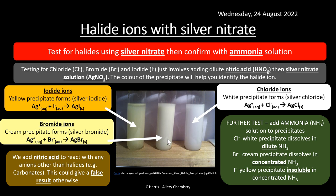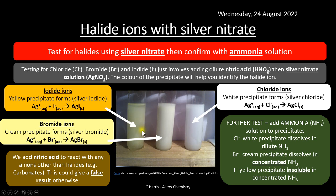If ammonia is added and the white precipitate dissolves in dilute ammonia, it contains chloride ions. If dilute ammonia is added to bromide or iodide precipitates, they won't dissolve. Adding concentrated ammonia will dissolve silver bromide, but silver iodide is insoluble in both dilute and concentrated ammonia — so if it doesn't dissolve in either, you've got iodide ions.